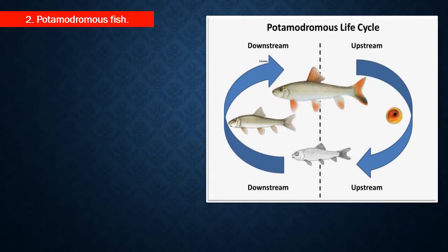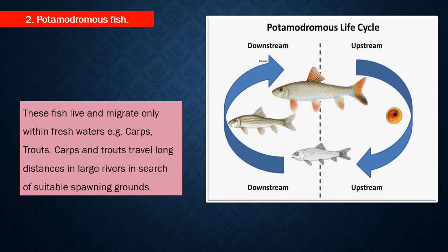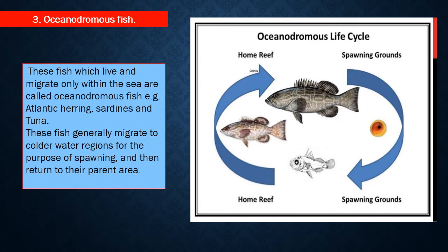Potamodromous fish live and migrate only within freshwaters. For example, carps and trouts travel long distances in large rivers in search of suitable spawning grounds. Oceanodromous fish live and migrate only within the sea. For example, Atlantic herring, sardines, and tuna.